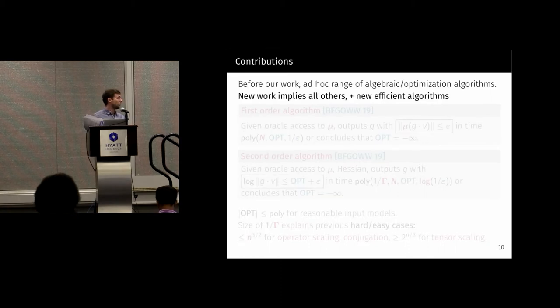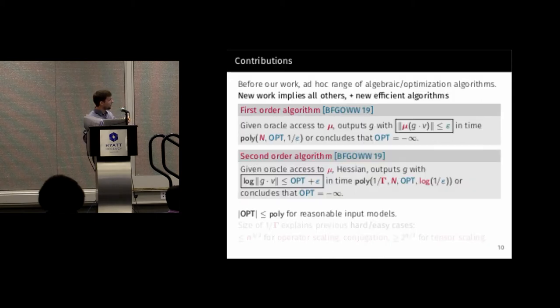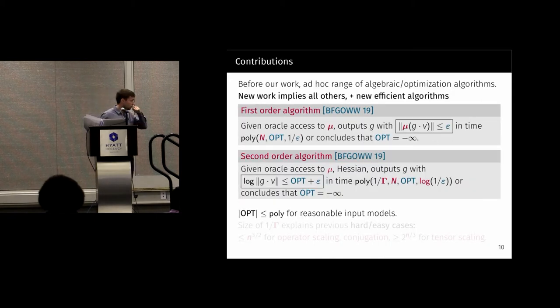Here's what we do. We give a first order algorithm for the scaling problem which works in time poly in this weight norm, the optimum and one over epsilon. And a second order algorithm—both of these algorithms have just oracle access to the norm and this gradient mu. Second order needs access to the Hessian. But this one outputs a point whose value is close to the objective value in time poly, but it depends on log one over epsilon, but one over this gamma. And this quantity gamma could be quite large.